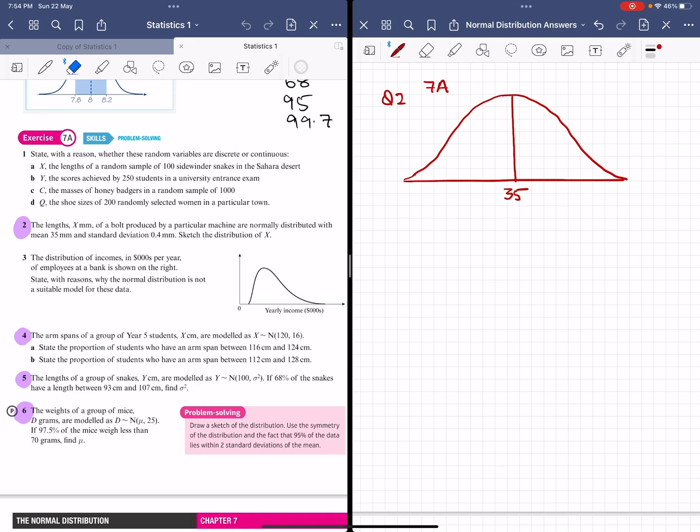We draw the bell curve. The mean is 35, so 35 goes in the center. We know that the normal distribution bell curve has standard deviations one, two, and three, so nearly all the data comes within three standard deviations.